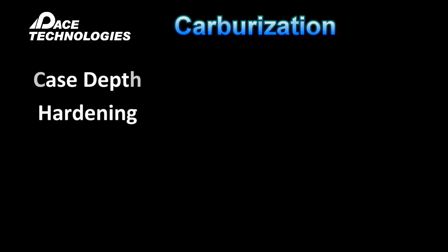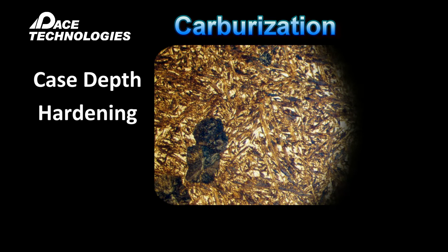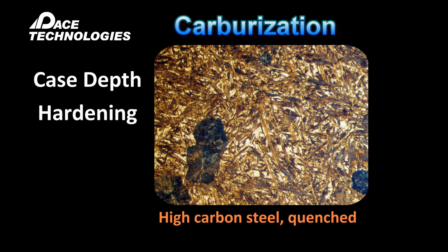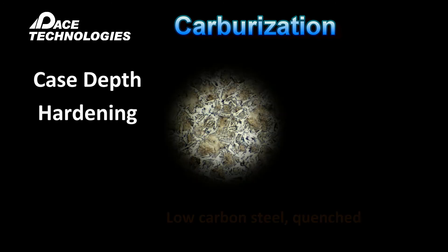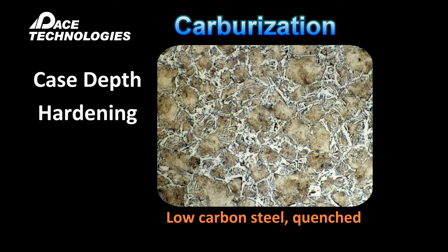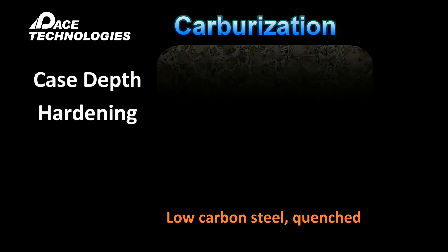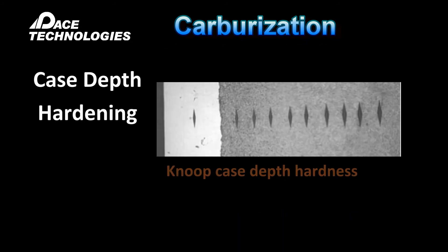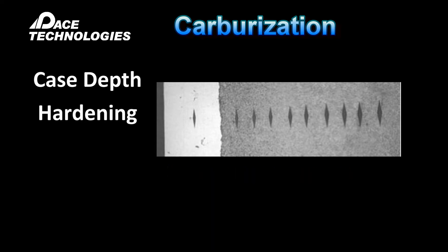The most common heat treating process for hardening ferrous alloys is known as carburizing. The carburizing process involves diffusing carbon into ferrous alloys at elevated temperatures. By quenching the metal immediately after carburizing, the surface layer can be hardened. Metallographic analysis, along with micro hardness testing, can reveal details regarding the case hardness and its depth.